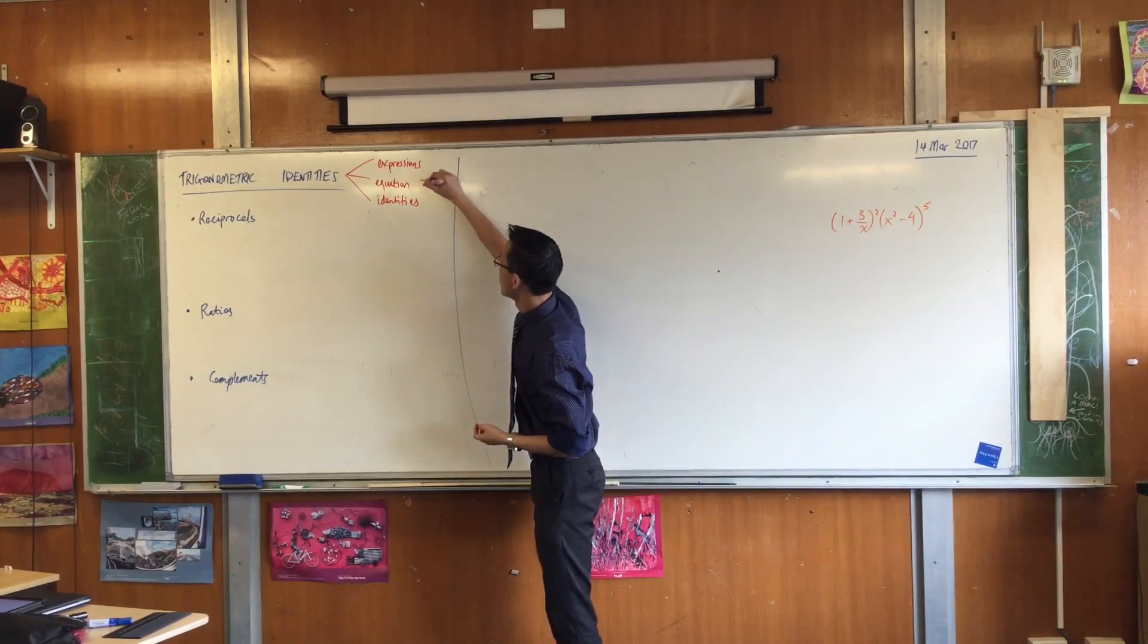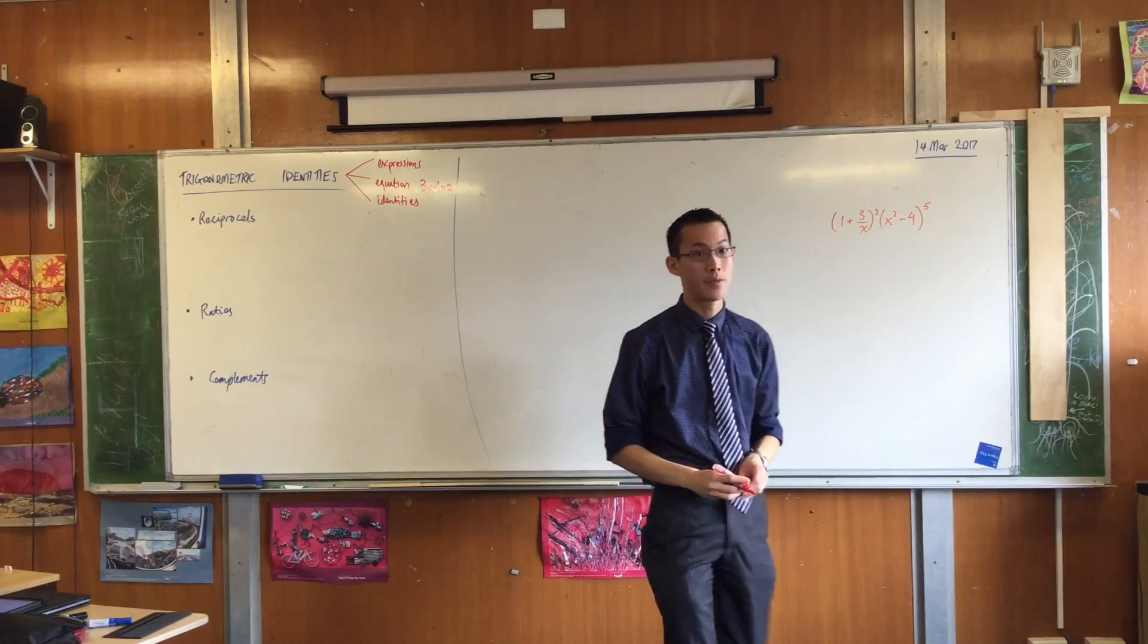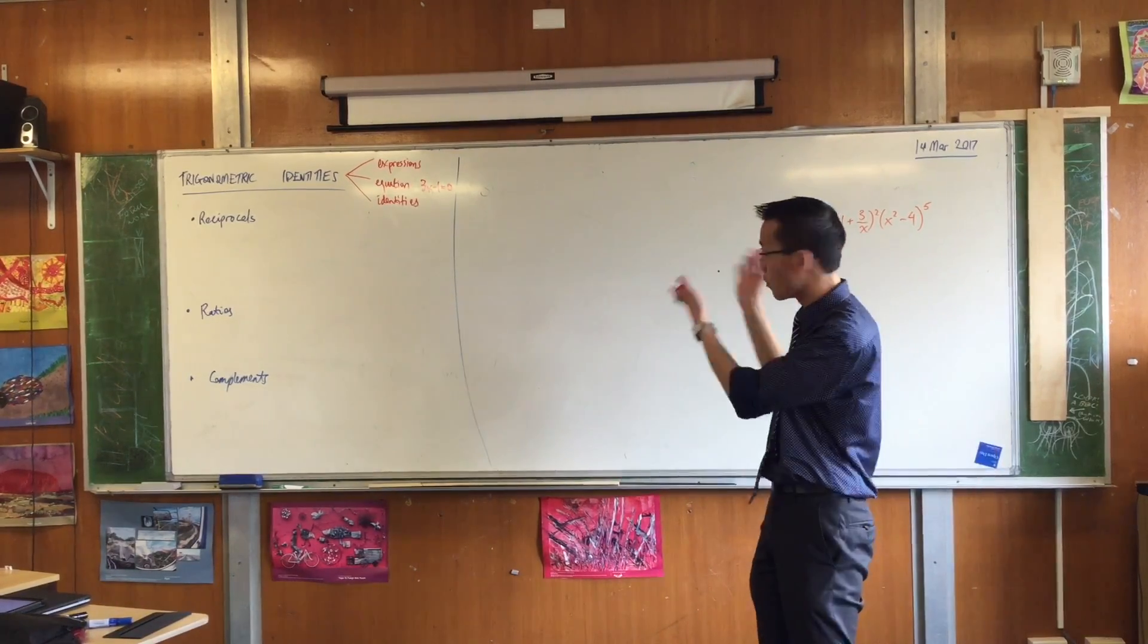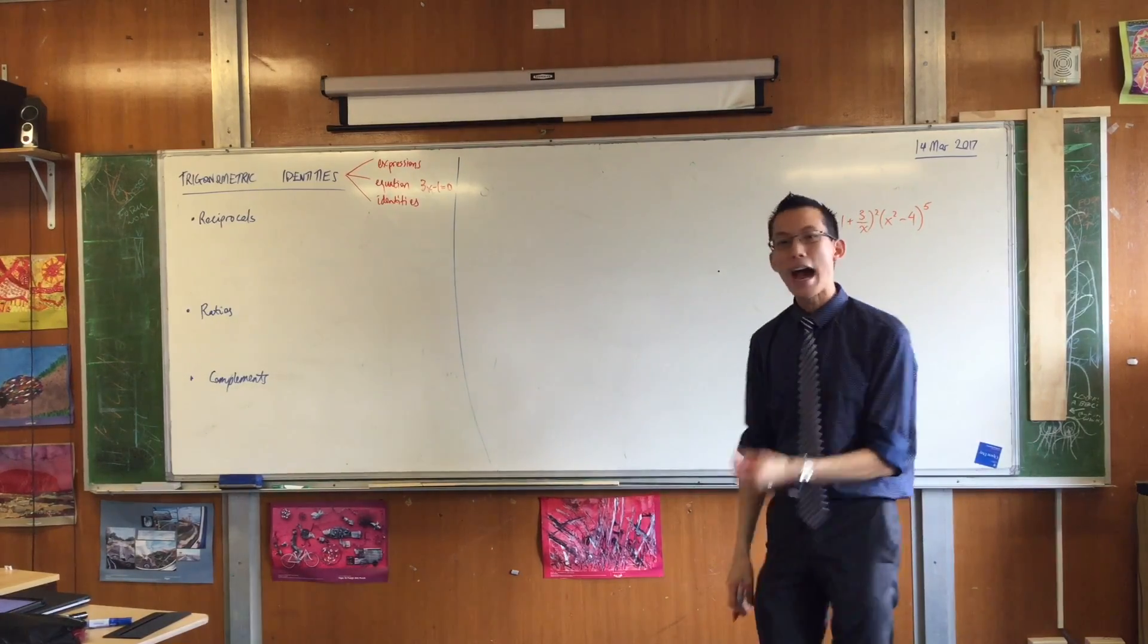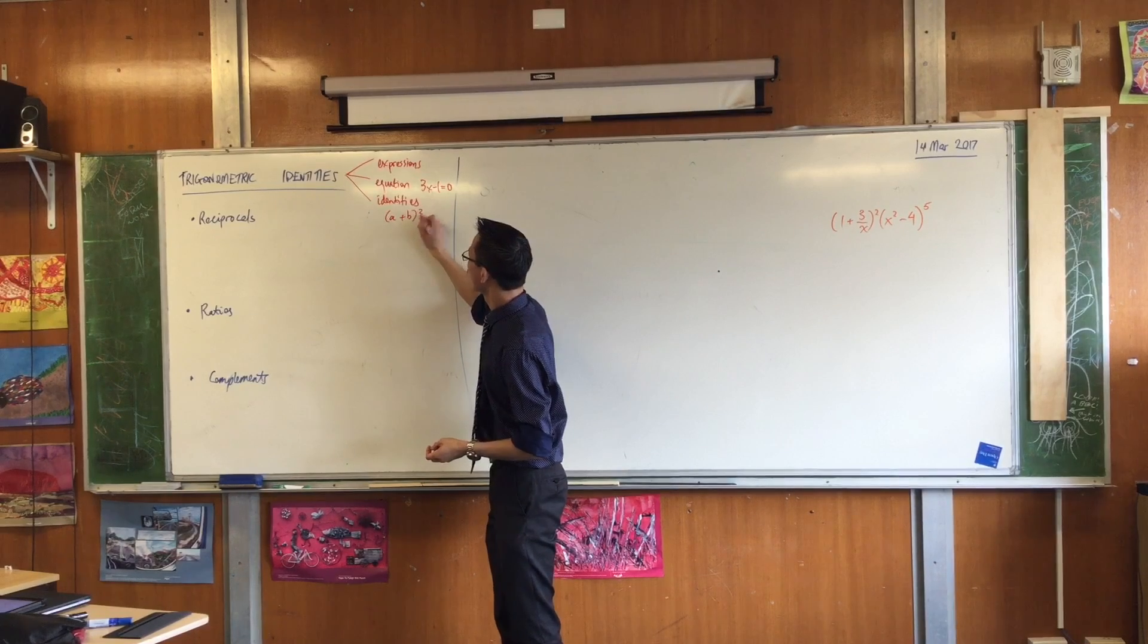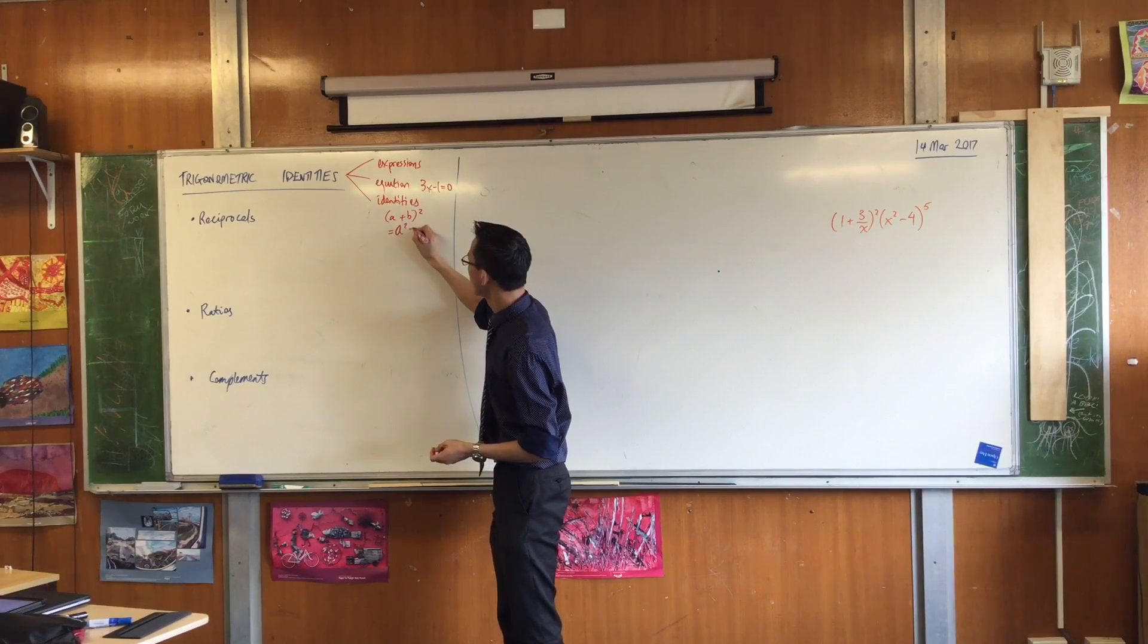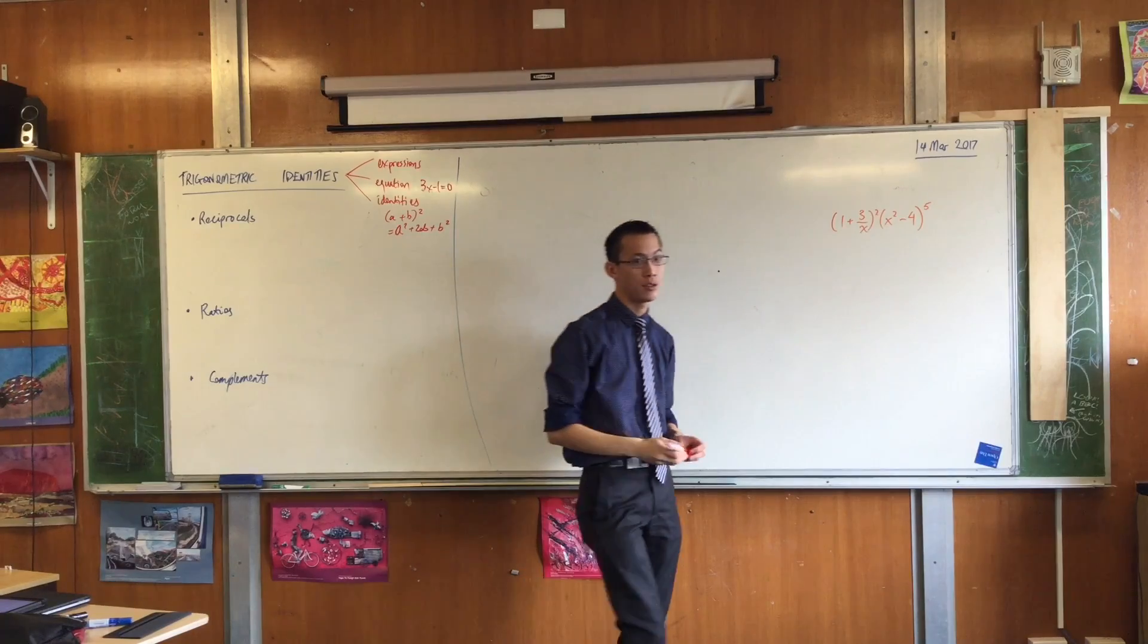Example, here's an equation. It's only true for one value of x. At that point, great, it works. But if you put in any other x, you're stuffed. Identities on the other hand, are true regardless of whatever values you substitute into them.